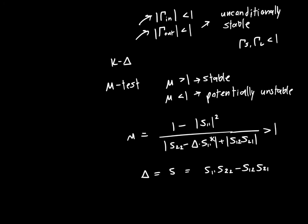The mu test is mathematically rigorous and will always work. If you plug in your S-parameters and get mu greater than one, your system is unconditionally stable. If you get mu less than one, your system is potentially unstable, and you'll need to do further analysis — which I'll go over in the next video.